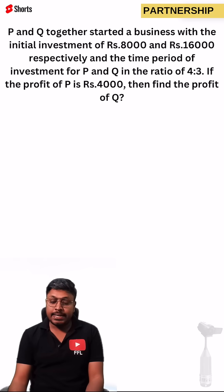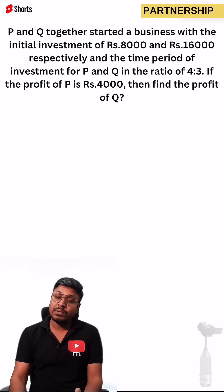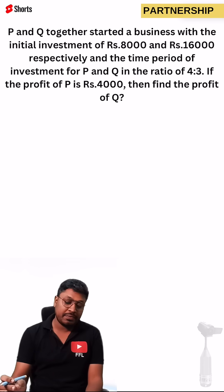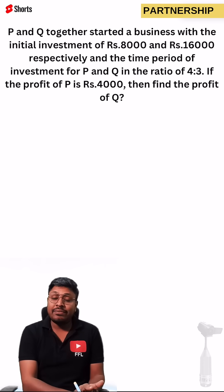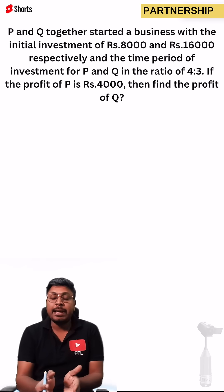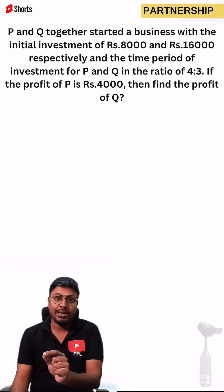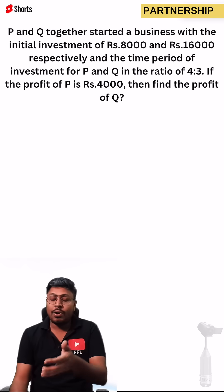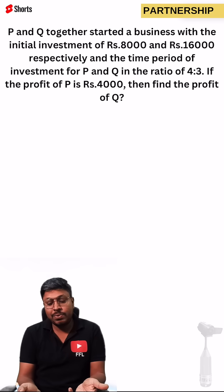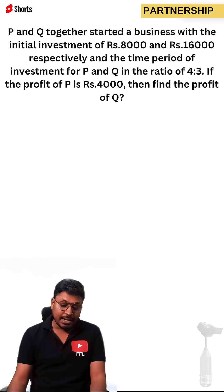P and Q together started a business with initial investments of rupees 8,000 and 16,000 respectively, and the time period of their investment is in the ratio 4:3. The amount they have invested is given, as well as the time period in terms of ratio — not a problem. You can take it as 4 months and 3 months, or 4 years and 3 years, since the value is given in ratio you can take it as 4x and 3x.